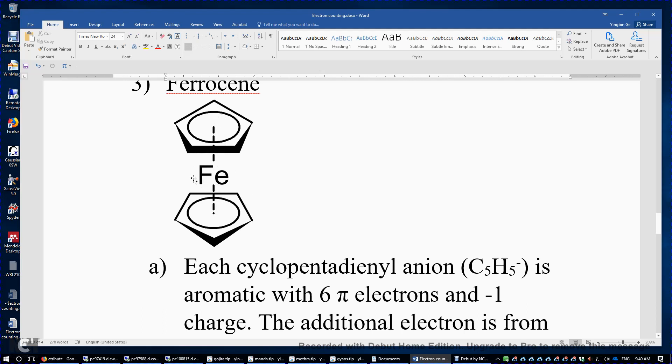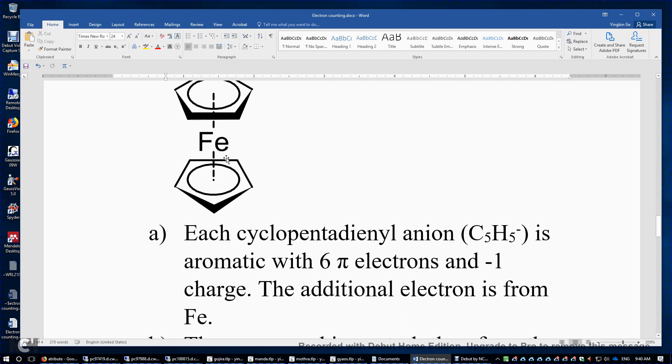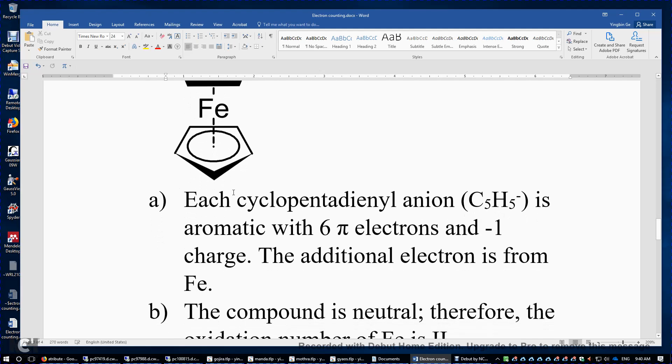This iron in the middle gives one electron to each of these two cyclopentadienyl anions. Therefore, this iron in the middle has an oxidation number of 2. And then that means there are 6 d electrons on this iron. And then plus 6 pi electrons from the top Cp and then 6 pi electrons from the bottom Cp. And then you have a total of 18 electrons.